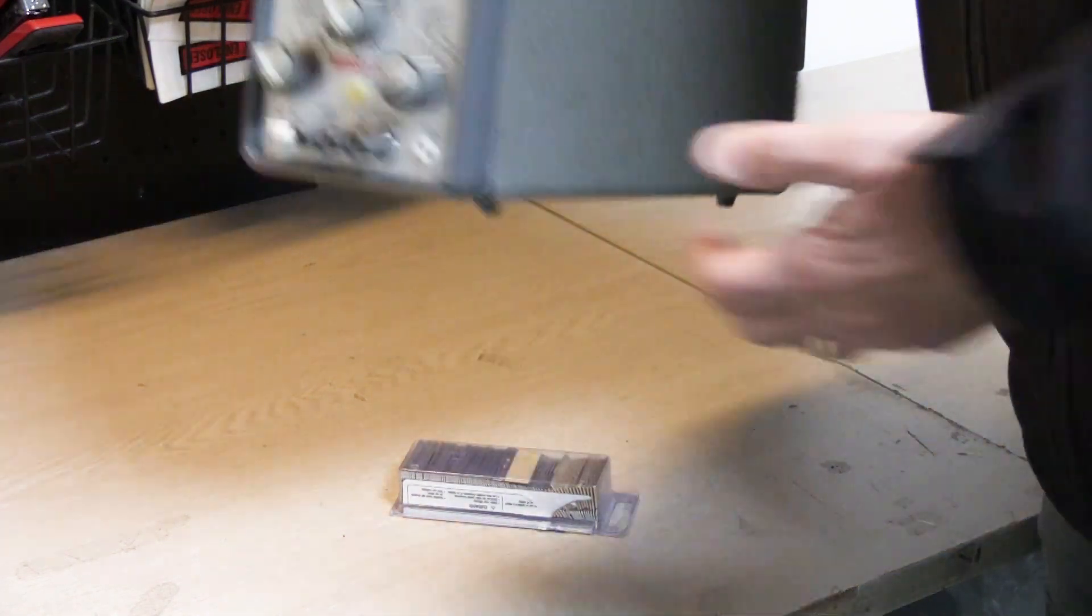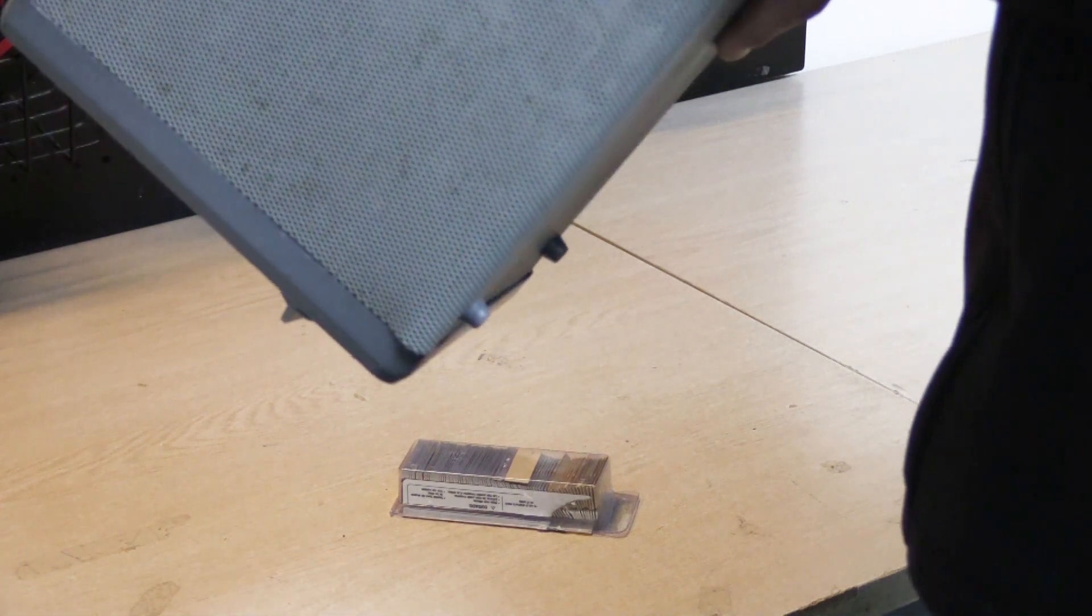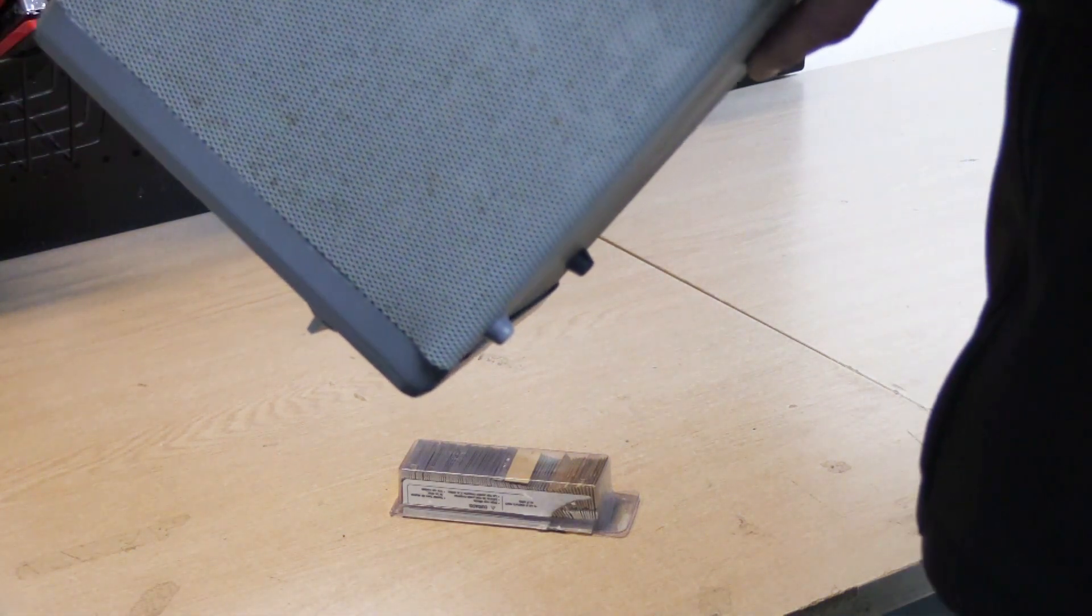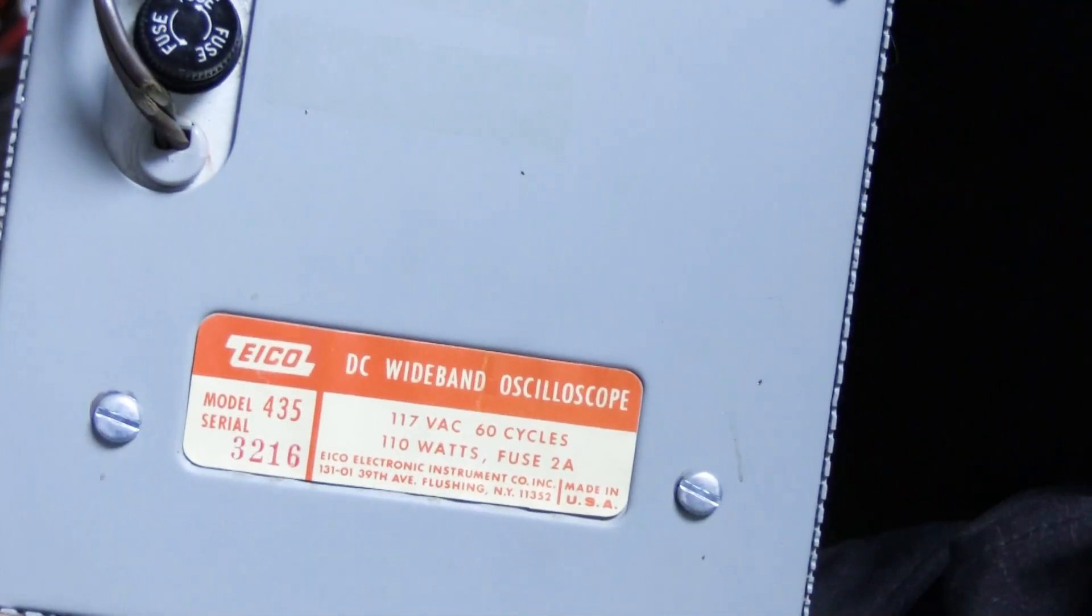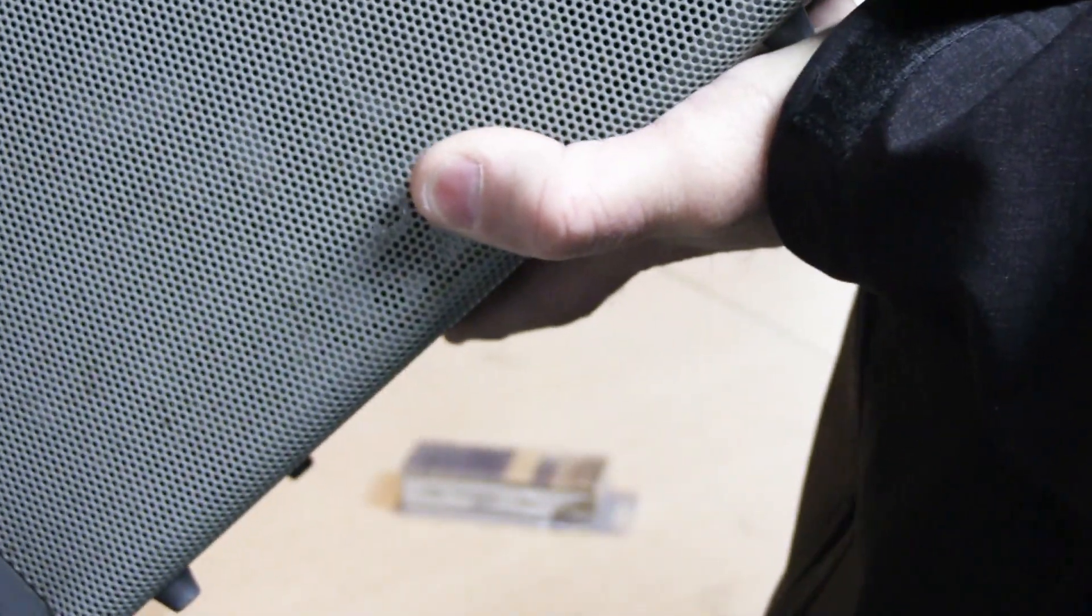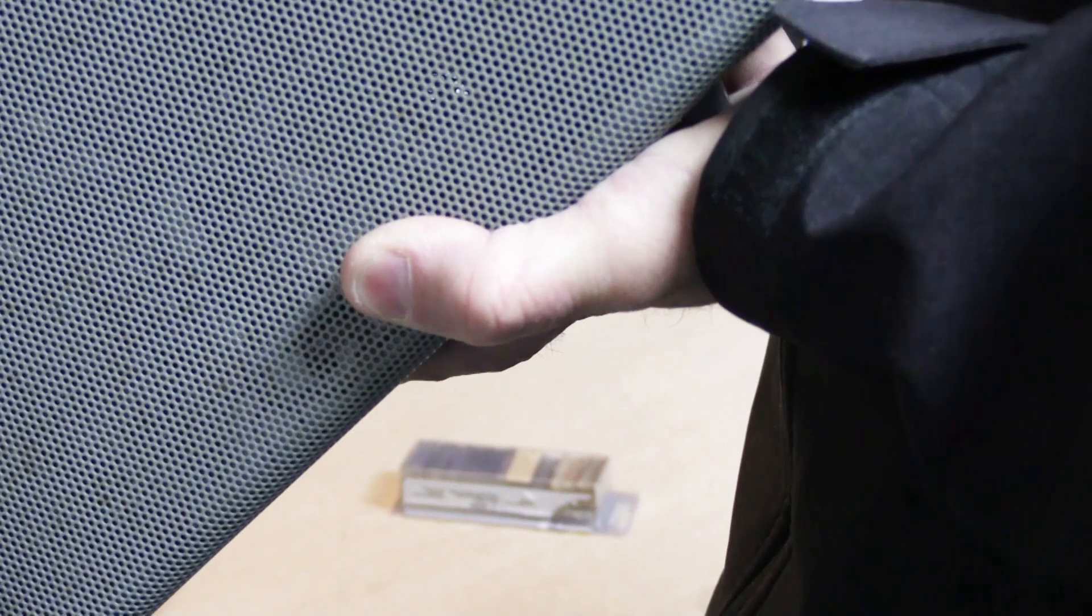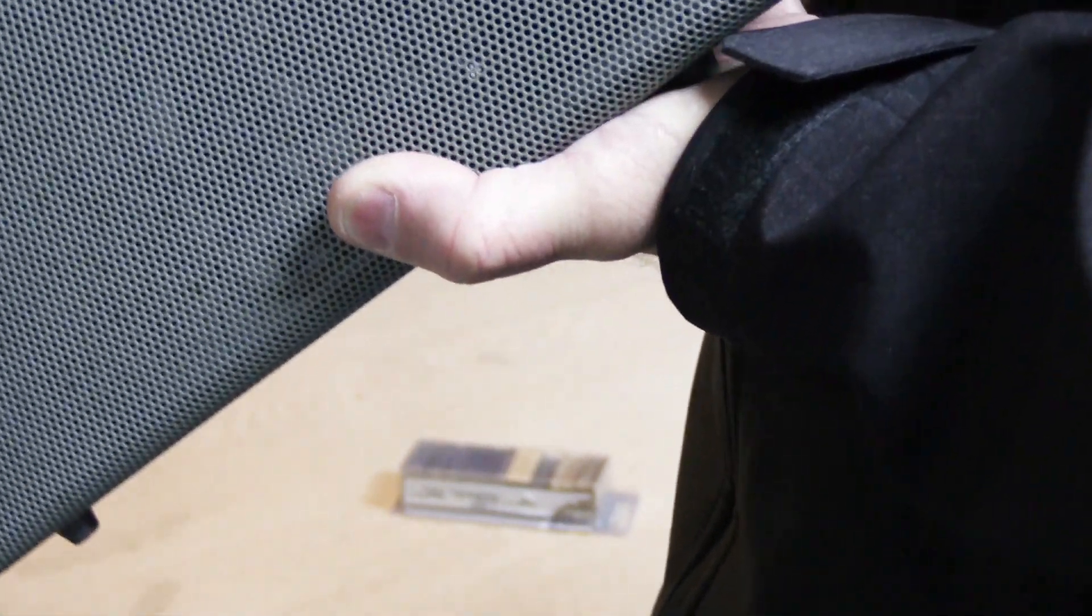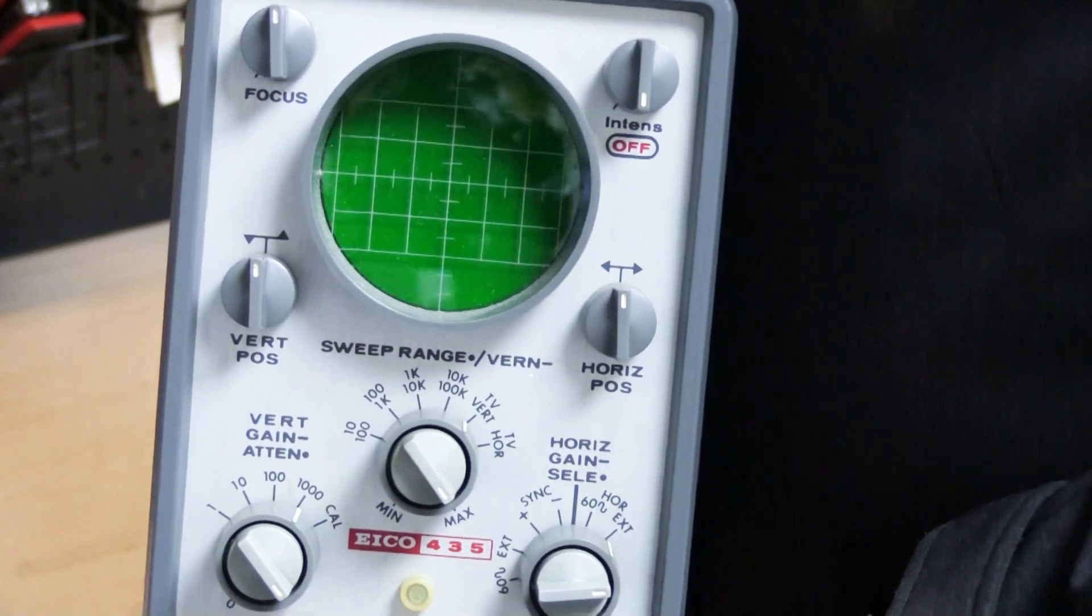This is definitely a 1960s oscilloscope. I'm not sure if there's a date code on here anywhere. It's an Ico model 435. Serial number is 3216. It's a DC wideband oscilloscope. It was made in Flushing, New York. And these typically have a bandwidth of about I think somewhere between four and six megahertz.